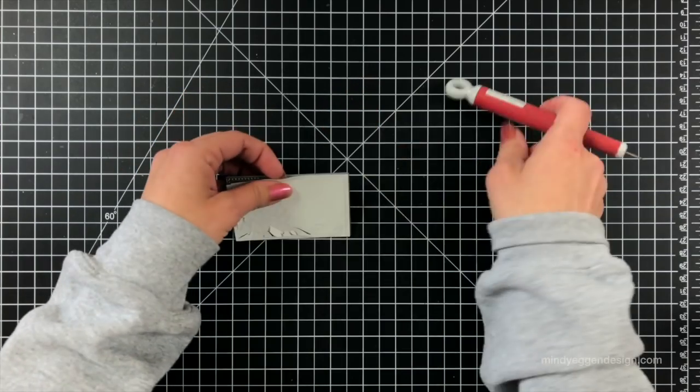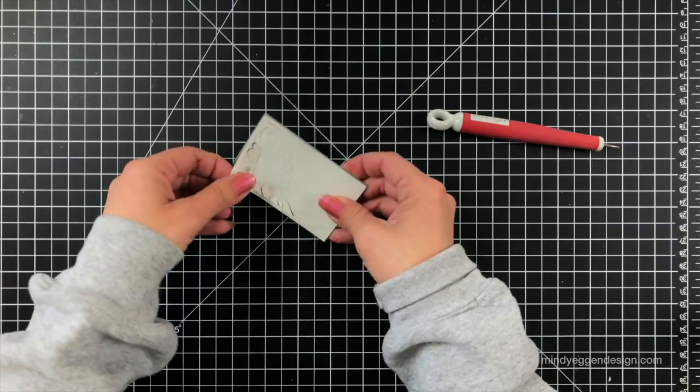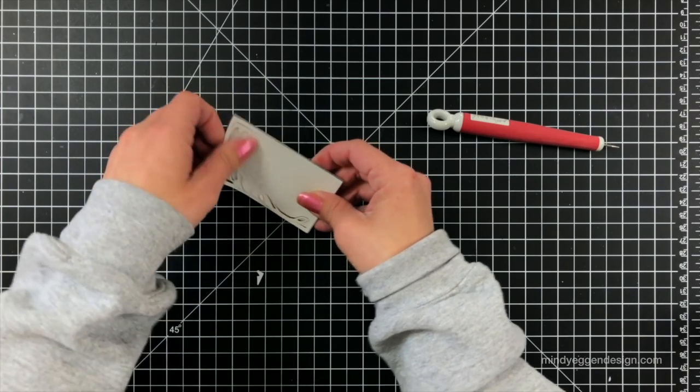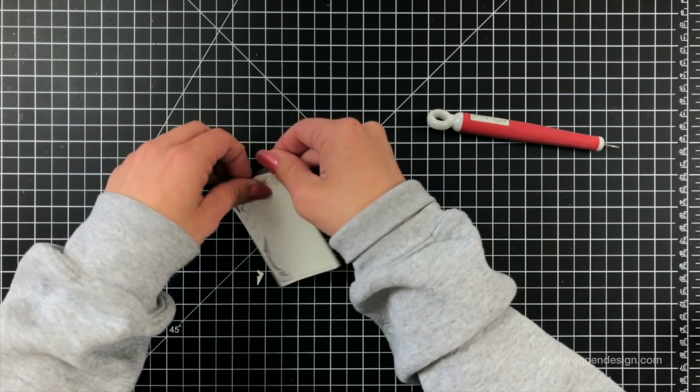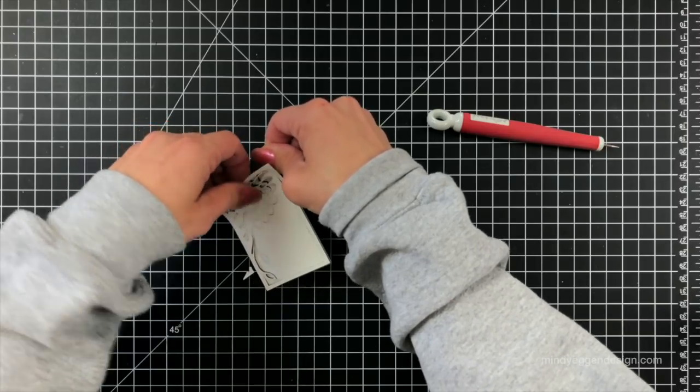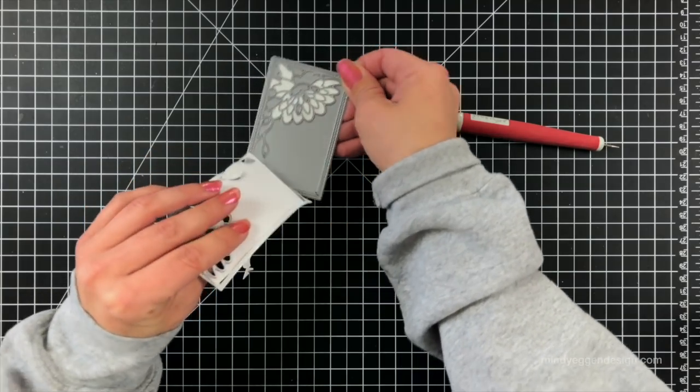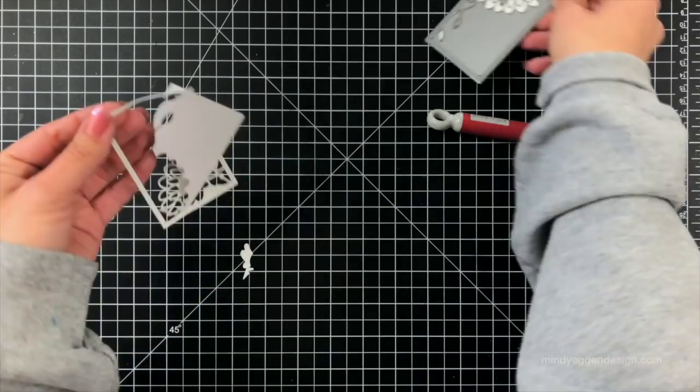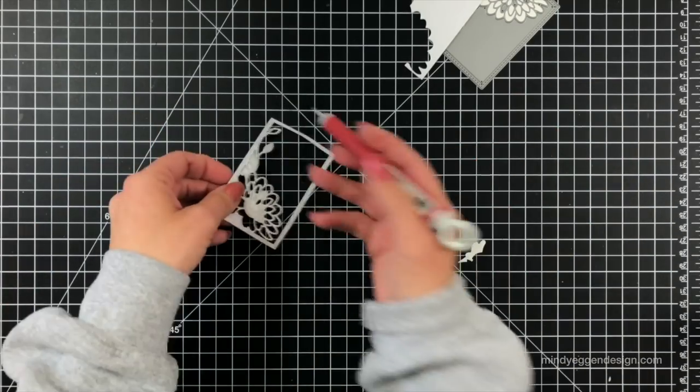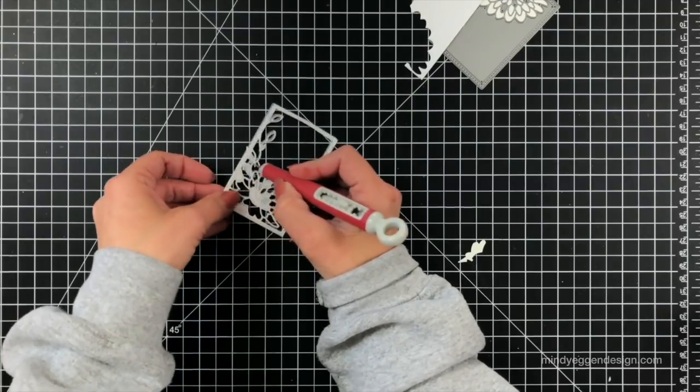So then once I ran that through the machine you could also do some inlay die cutting because as you can see this is really stuck in there. I'm kind of carefully prying the edges up and then I'll pull it very carefully. I don't want to ruin any of my intricate design. And you could save those pieces. I'm not really one for inlay die cutting but if you are it's a gorgeous look that you can do with this as well. And then I'm just going to take my little pokey tool and pop out any of the inside pieces that didn't come out freely.